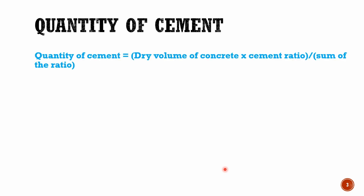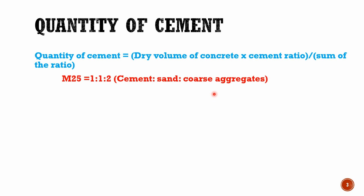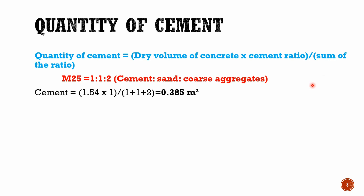To calculate the quantity of cement, you have to remember a simple formula: quantity of cement equals to dry volume of concrete multiplied by cement ratio, divided by the sum of the ratio. The mix ratio of M25 grade of concrete is 1:1:2, which means cement, sand and coarse aggregate are in the ratio of 1:1:2. Substituting these values, quantity of cement equals to 1.54 multiplied by 1, divided by 1 plus 1 plus 2, which equals 0.385 cubic meter.